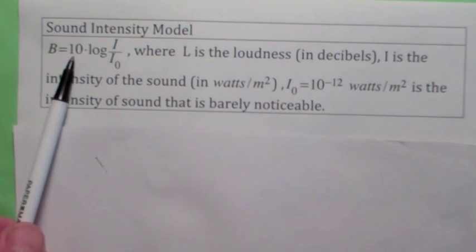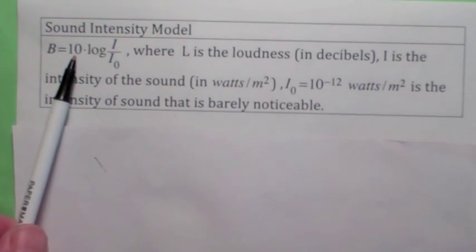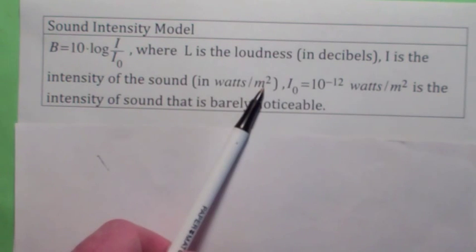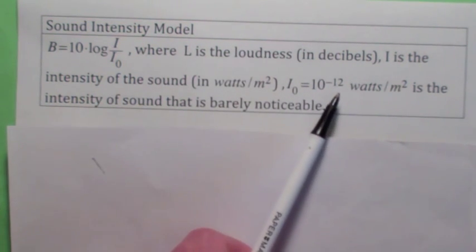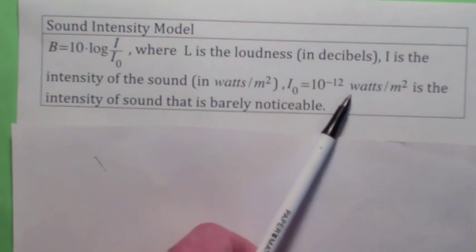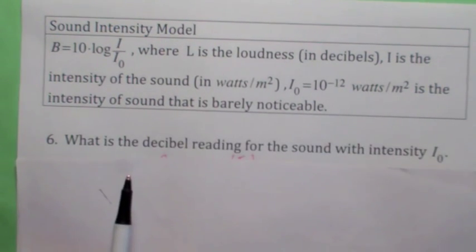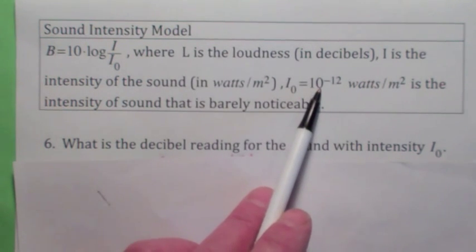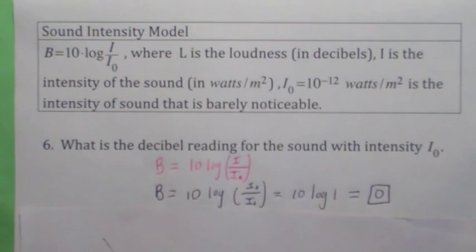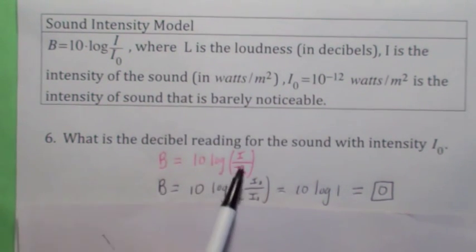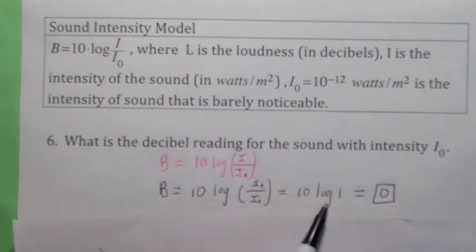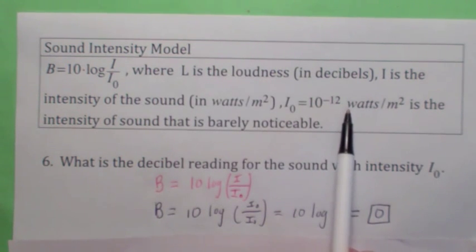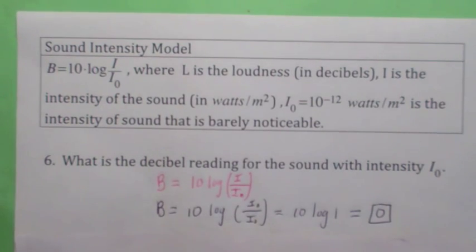This last one, the decibel reading, is very similar to the Richter scale reading — you've got this extra factor of 10 here, which magnifies the values a bit, but the same idea. You've got the intensity of the sound measured in watts per square meter, and you have I0 — same thing as S — this is the threshold by which a human being could hear a sound. The decibel reading is 10 times the log of I over I0. If I equals I0, you have 10 times the logarithm of 1, which is 0. It makes sense that that should be 0, because this is the threshold by which you could barely notice it — it's nice to have a scale that reads 0 there.